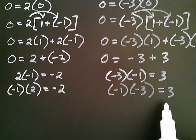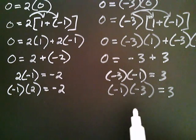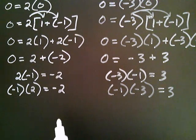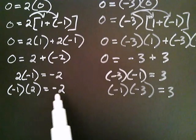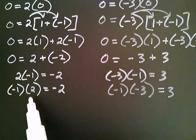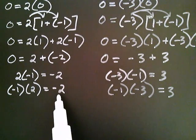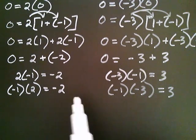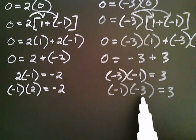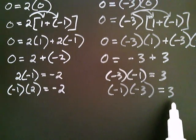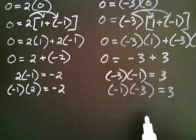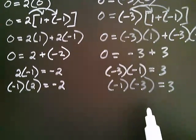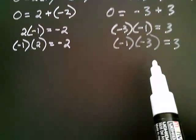So the key to multiplying two negative numbers lies in that observation. Negative one times any number causes the number to change sign — either from positive to negative, or from negative to positive. Let's see why that helps us multiply two negative numbers together.